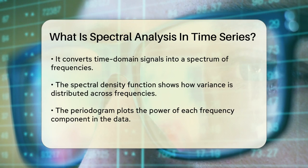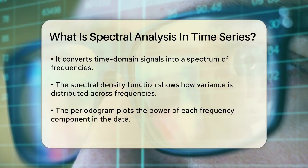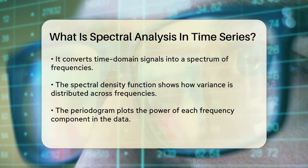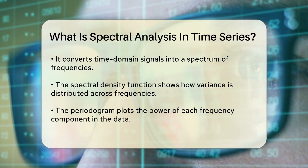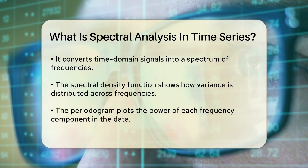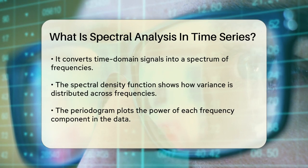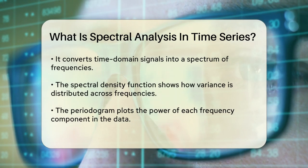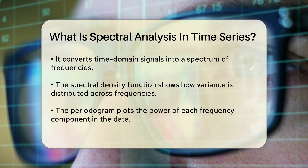In the frequency domain, you can analyze the spectral density function, which tells you how the variance of your data is distributed across different frequencies. This function is essentially the first derivative of the spectral distribution function, which shows the contribution of each frequency to the variance of your data.